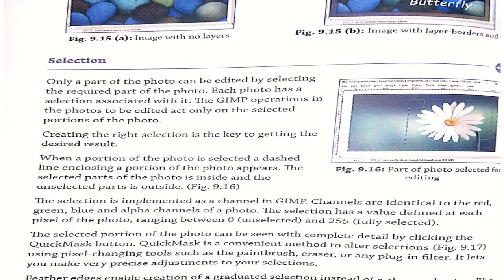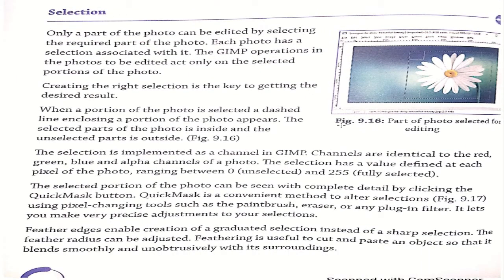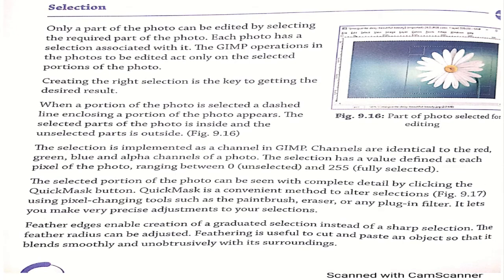Next is selection. Whenever you do any type of function in GIMP, you first need to make a selection, and then only you can make any type of changes. Only a part of a photo can be edited by first selecting the required part. Without selection, you cannot edit or apply anything to your photograph.